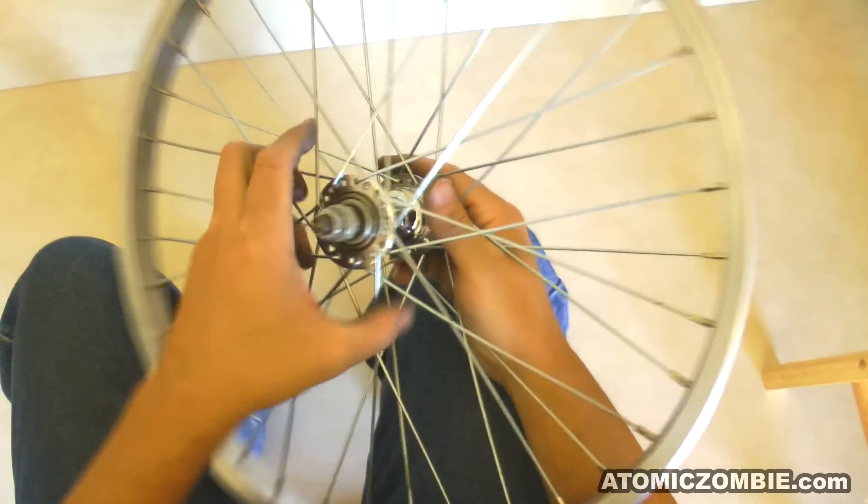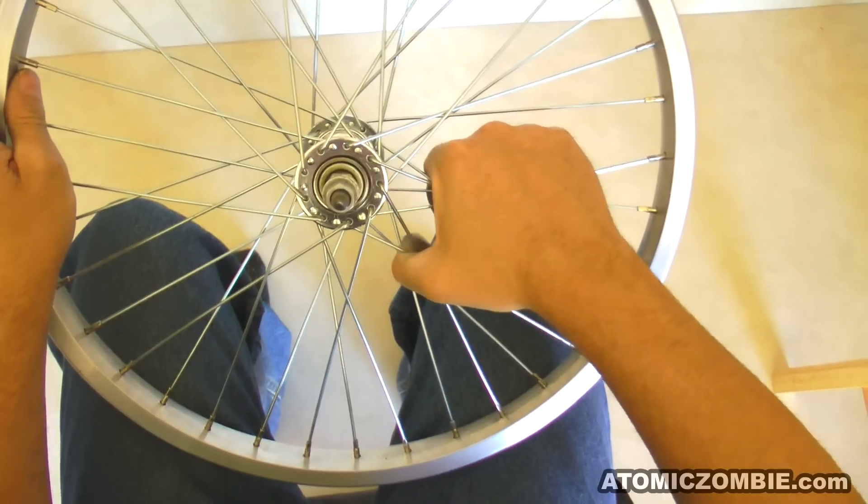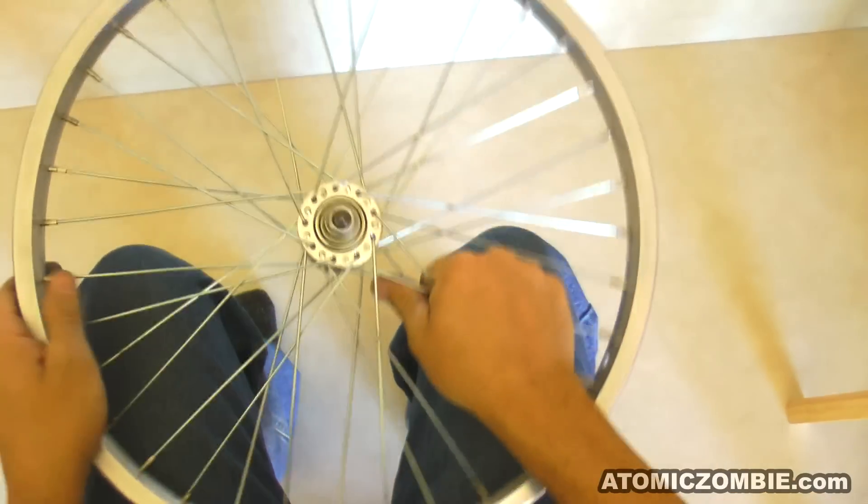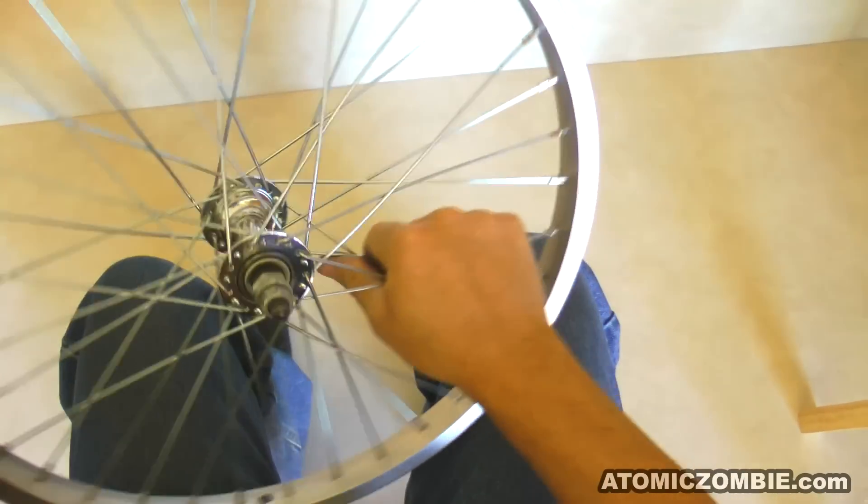As the crossing spokes are pulled tight, they will straighten out, but you can make your truing work easier by flexing the spokes by hand in order to help pull them straight.